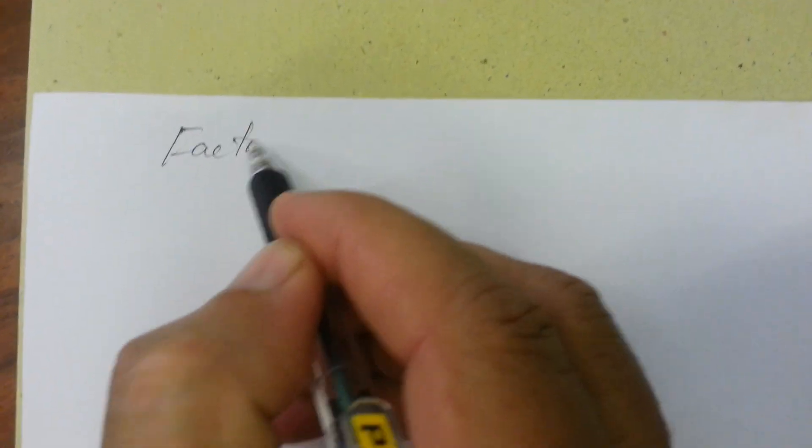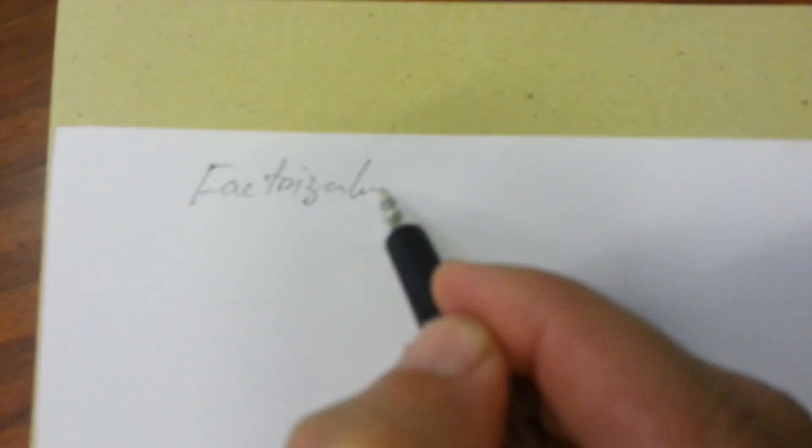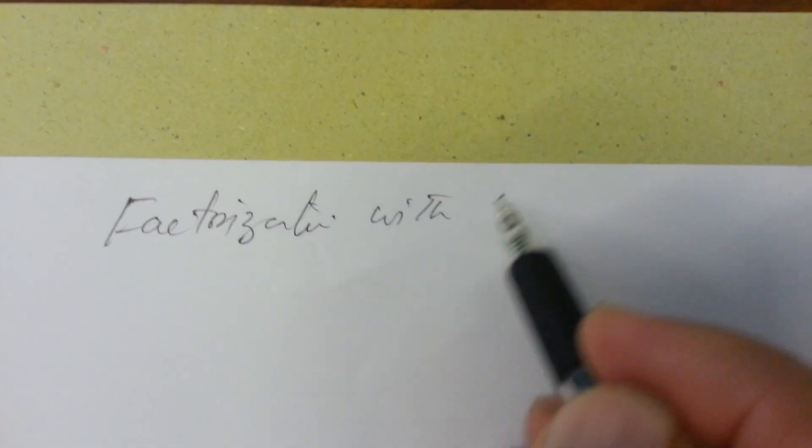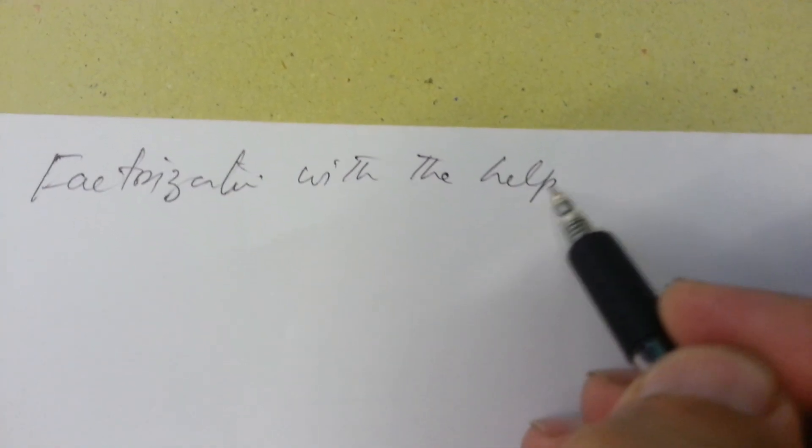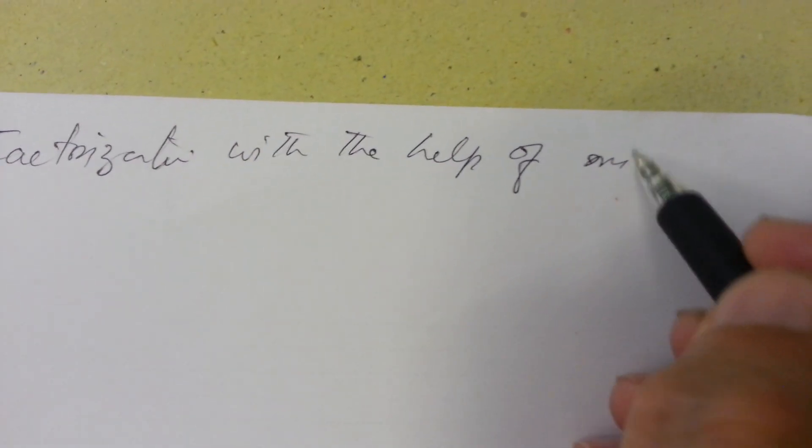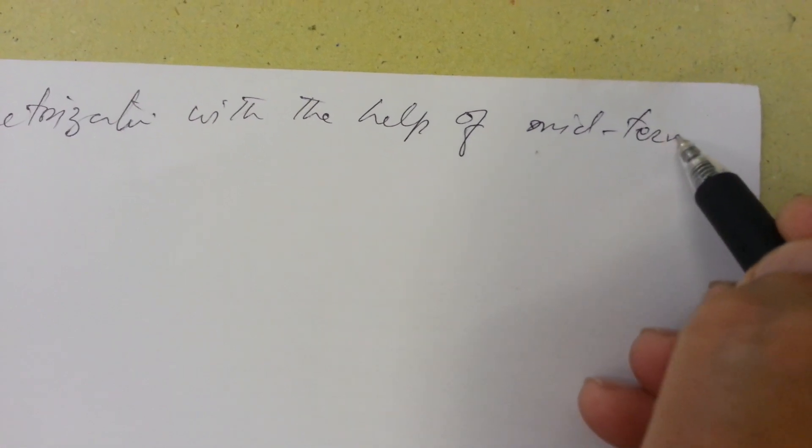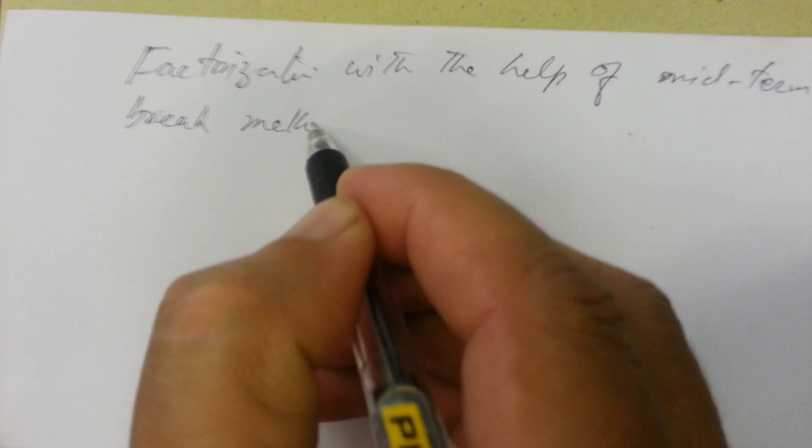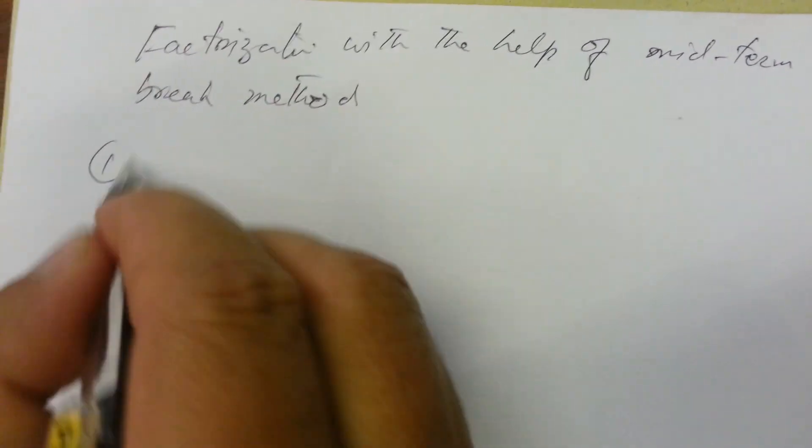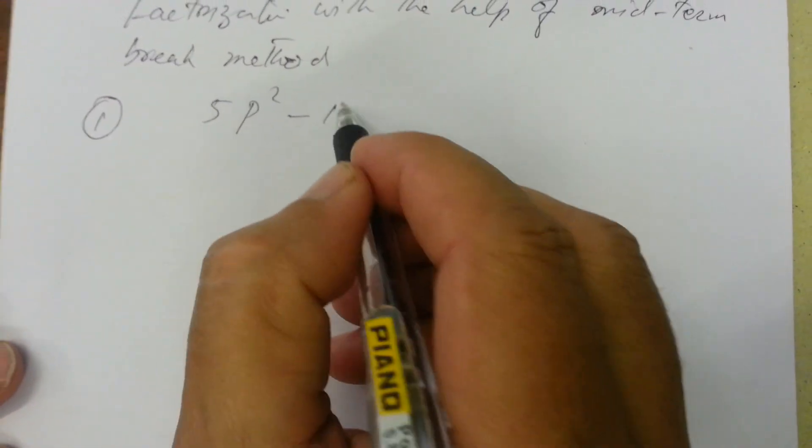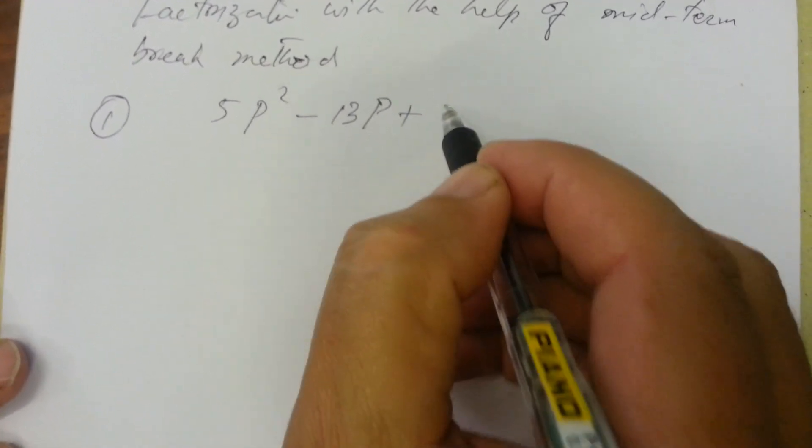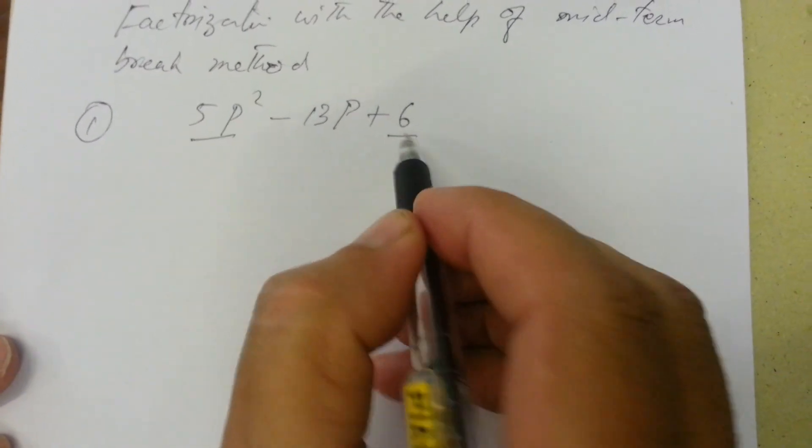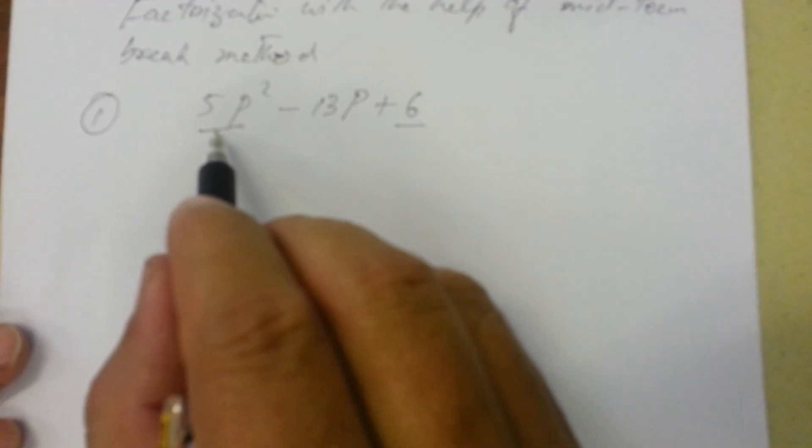Structuralization with the help of midterm break method. Question 1: 5p² - 13p + 6. By multiplying the last term and first term, we will get 30p².